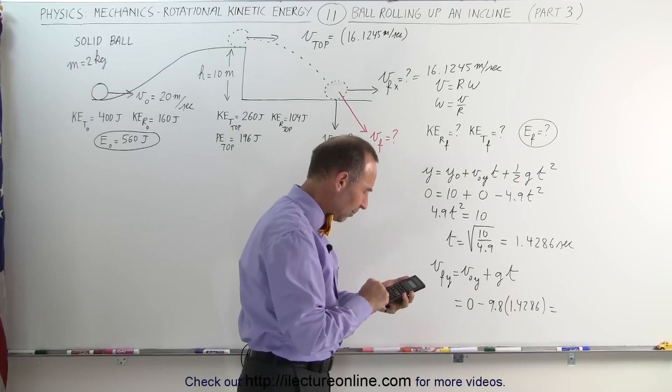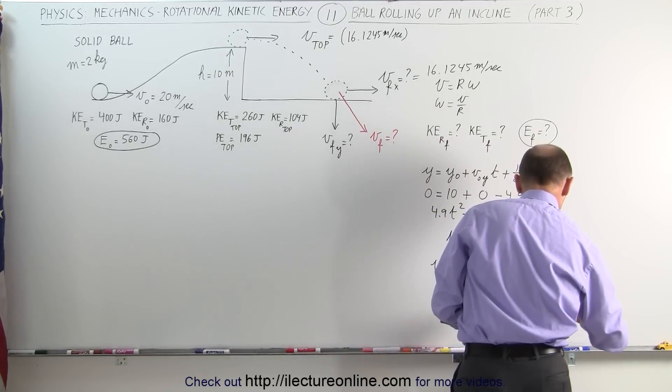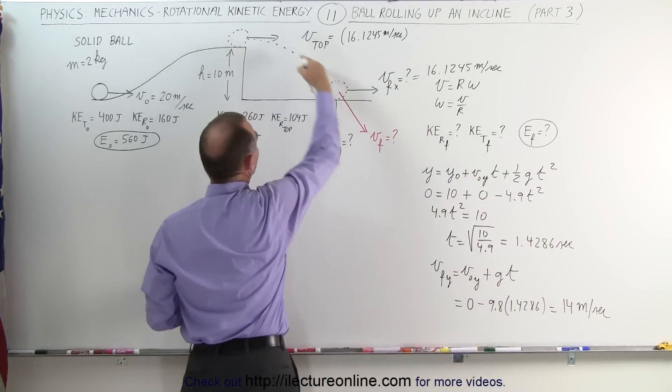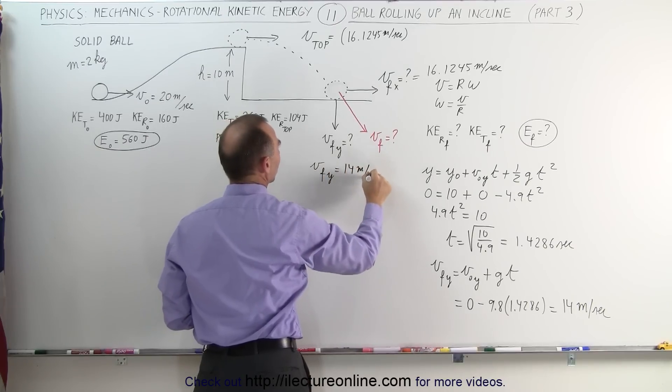Times 9.8, that is equal to 14 meters per second exactly. So by the time the ball then finally hits the ground in the y-direction, v final in the y-direction is equal to 14 meters per second. And we have the v final in the x-direction.